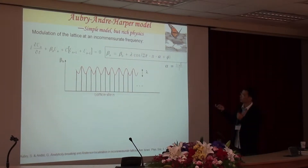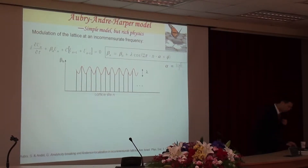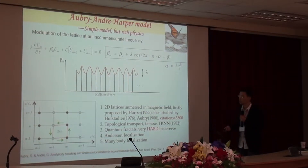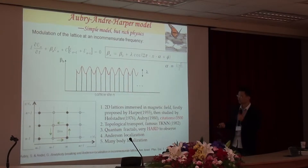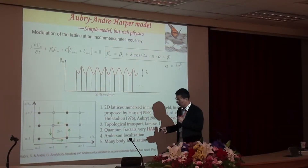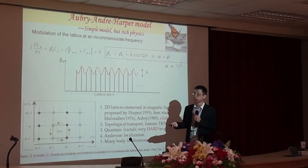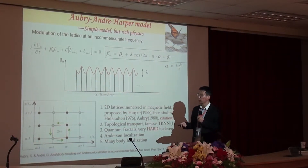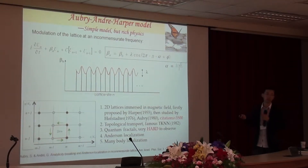On the other hand, we should introduce lambda to describe the modulation strength. This is a 1D model, but actually this 1D model originates from a 2D lattice model immersed in a magnetic field — that's the Harper model. For the Harper model, the field is homogeneous. We can use the Landau gauge and apply periodic boundary conditions, then reduce this 2D problem into a 1D problem.